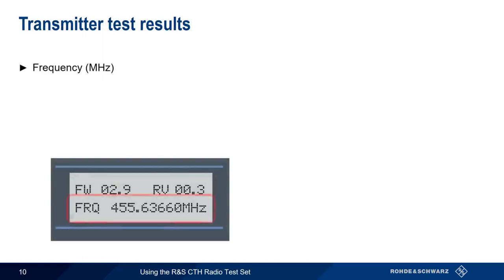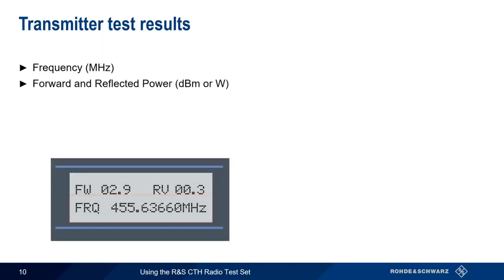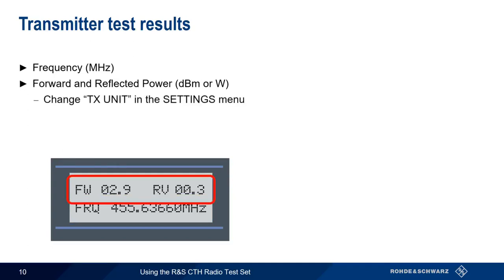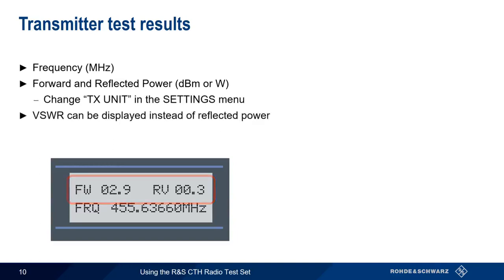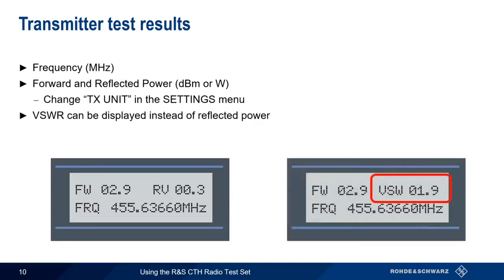The transmitter test results include frequency, given in megahertz, as well as both forward and reflected power, in units of either dBm or watts. This can be changed using TX Unit in the Settings menu. Results can also be shown as VSWR by enabling TX VSWR under Settings.